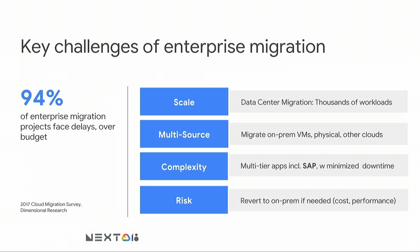It's one thing to move dozens of workloads; it's a whole different story when you need to deal with thousands. What do you do with multi-source — virtual machines plus physical servers? What about workloads already deployed to another cloud like AWS that you want to move to GCP? How do you deal with complex applications like SAP, multi-tier workloads with large databases and strict downtime requirements? And how do you mitigate risk? Many enterprise customers told us this is a barrier to adoption — they can't afford days of downtime if something doesn't work.